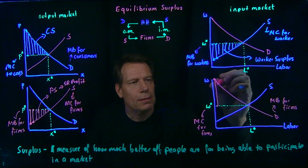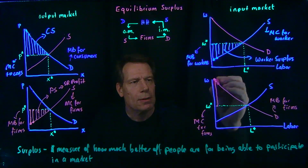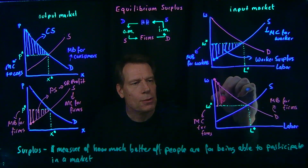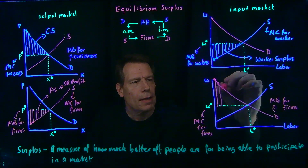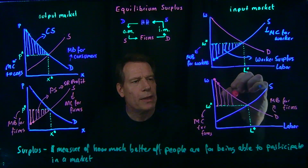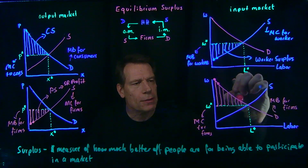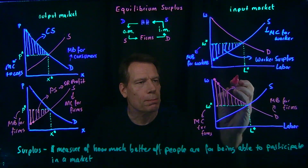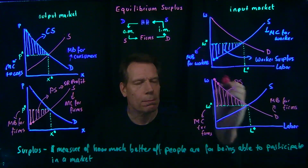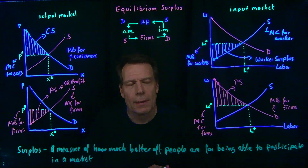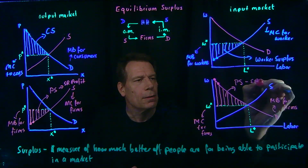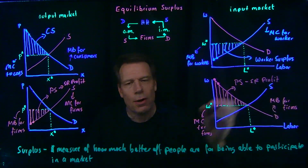Similarly, for the next worker, there's a firm willing to pay this much but only has to pay the market wage, so they're making an additional marginal profit of this distance, and so on. When we add up all those marginal profits, we get a measure of producer surplus or firm surplus in this labor market — in other words, a measure of the profit. And again, it's the short-run profit because we're not thinking about fixed costs.